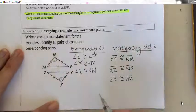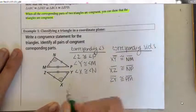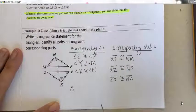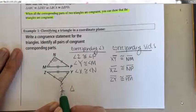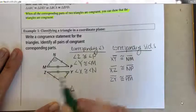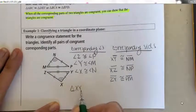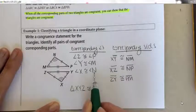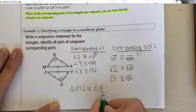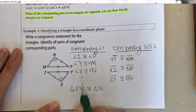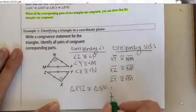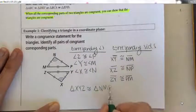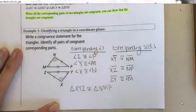Now for the congruent statement, it's important to put corresponding angles in the same position. I'll go X, Y, Z — so triangle XYZ is congruent to triangle NMP, since X corresponds to N, Y corresponds to M, and Z corresponds to P. That answers both parts of this example.